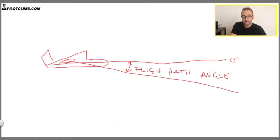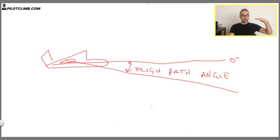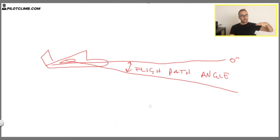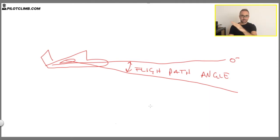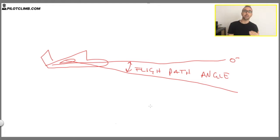For example, if the aircraft has zero pitch attitude but cannot maintain straight-level flight due to lift limitations, it will start descending. In that case, the pitch attitude angle is zero but the flight path angle is negative. Conversely, if the aircraft has a positive pitch attitude and is climbing, it will have both a positive pitch attitude and a positive flight path angle.